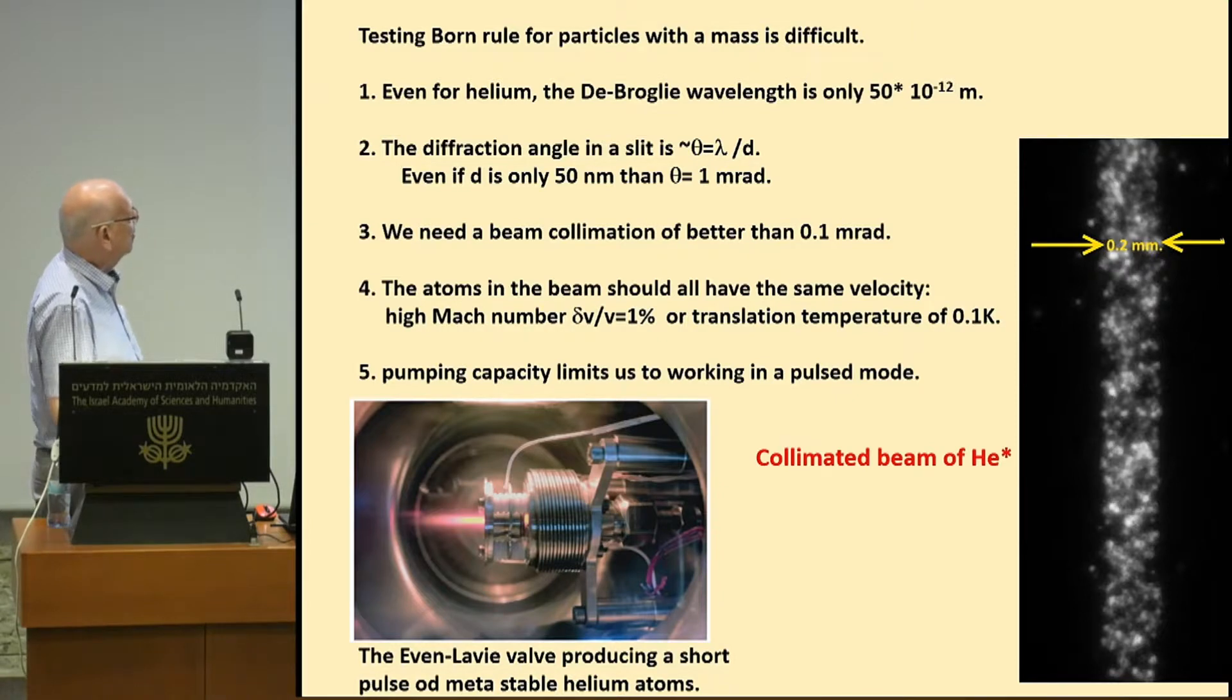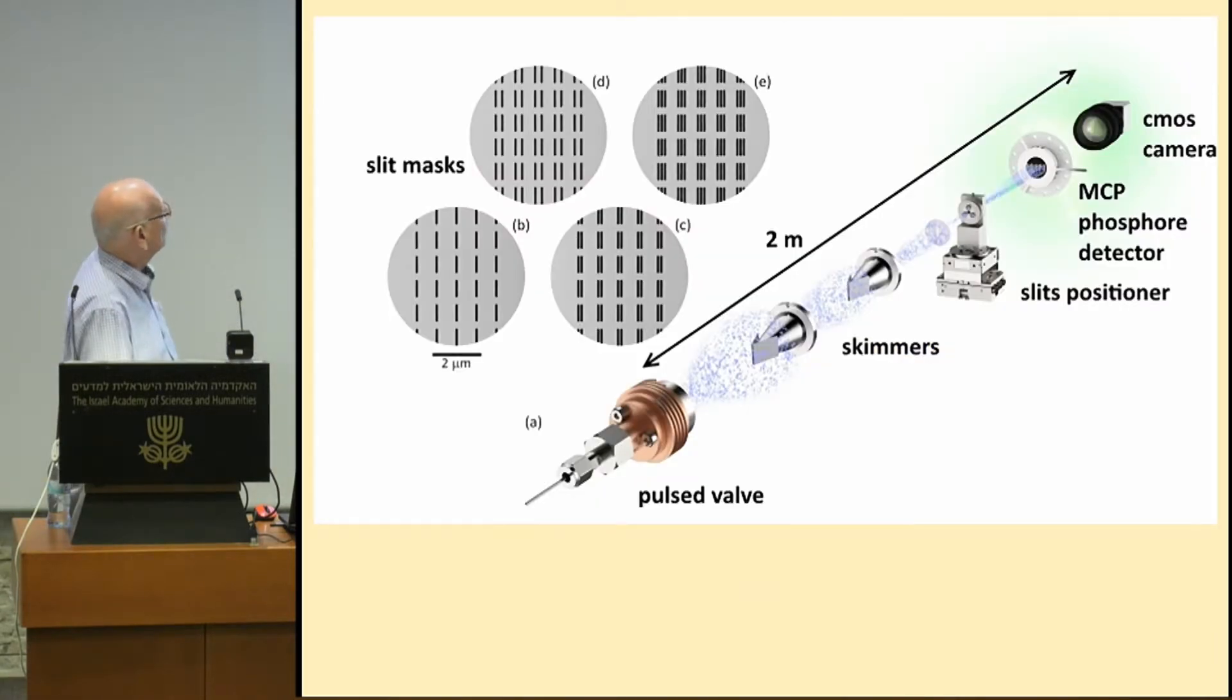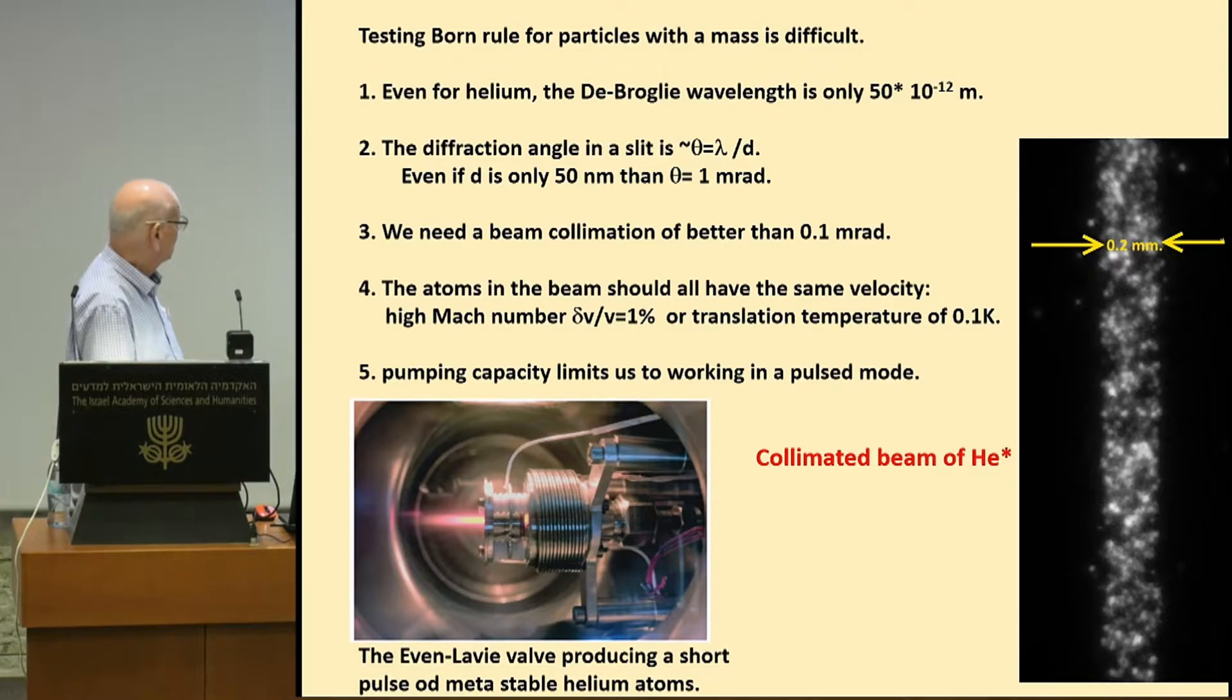And we can collimate the beam to generate, you see this is the pattern that you get if you don't have any slits. So we have a very narrow beam. Why do we have to be, why does it have to be very narrow?